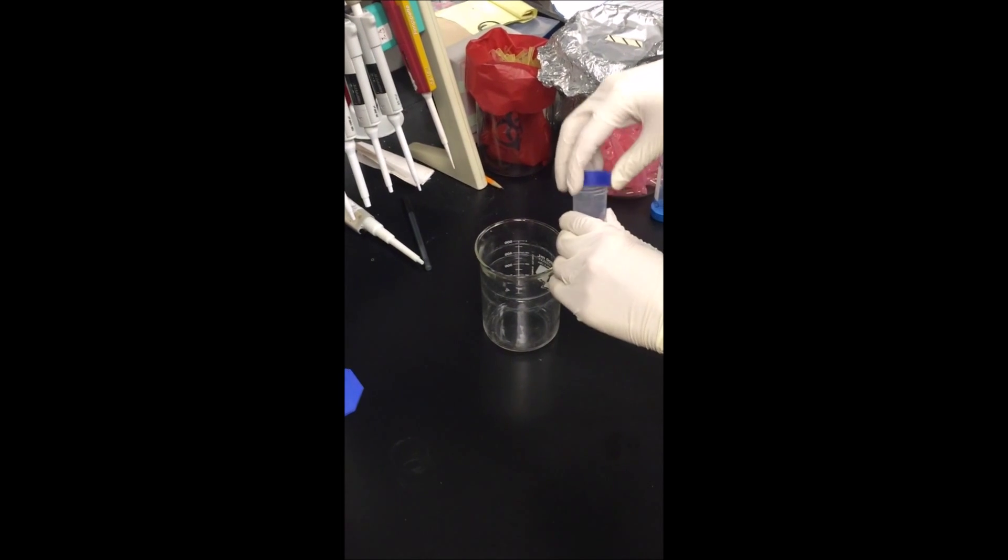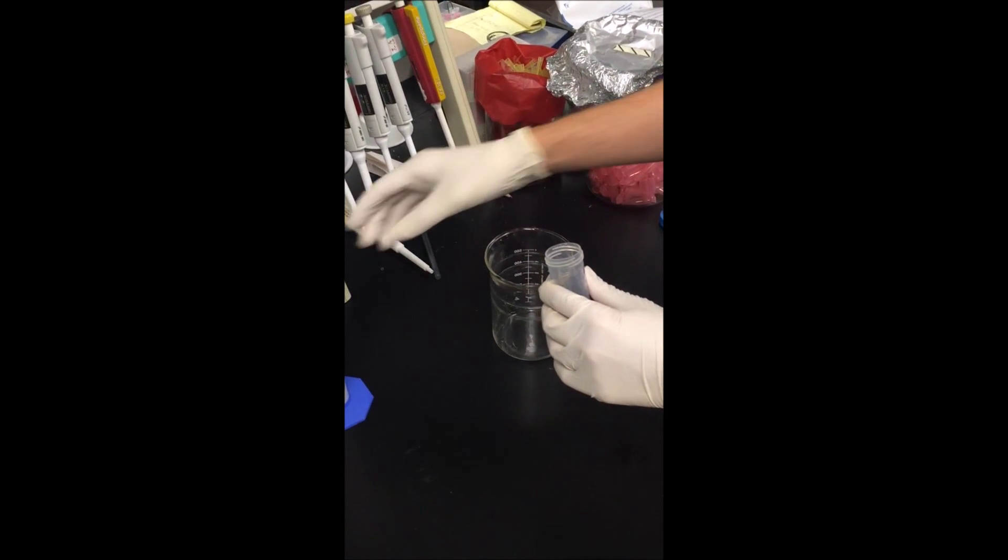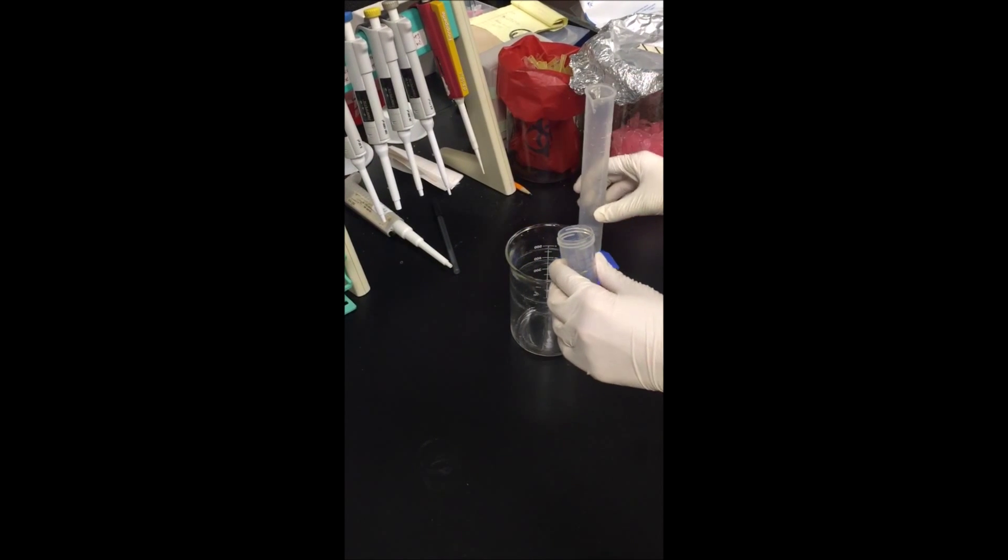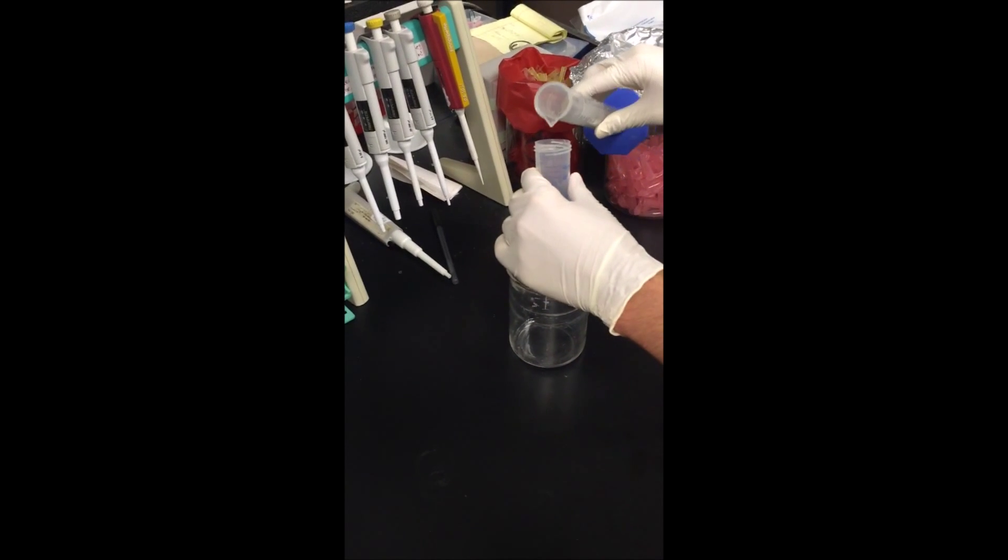Okay guys, so now that you've poured off the excess bleach solution, it's time to add the H2O2 or hydrogen peroxide 2% solution.